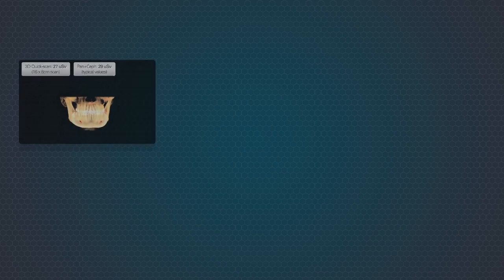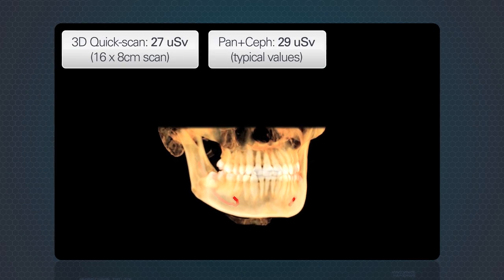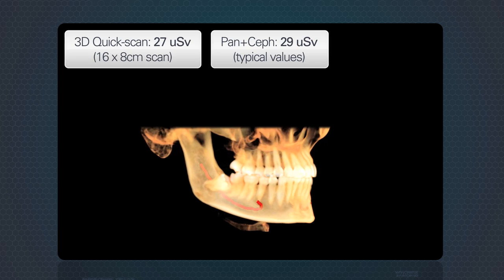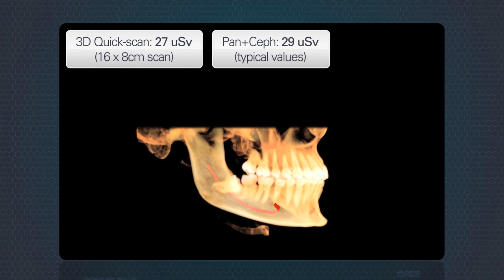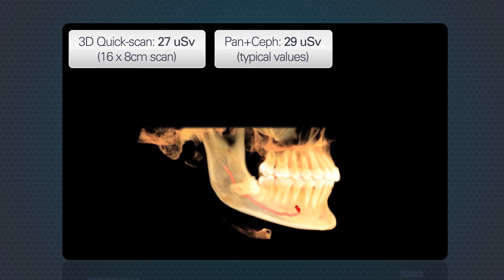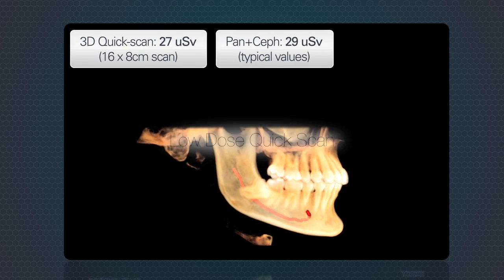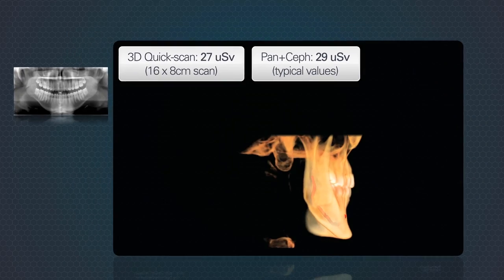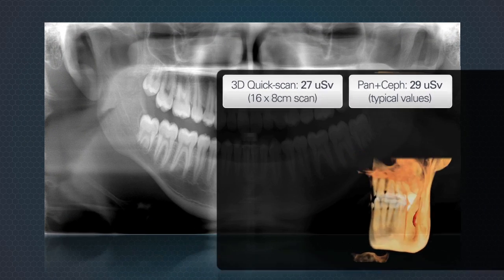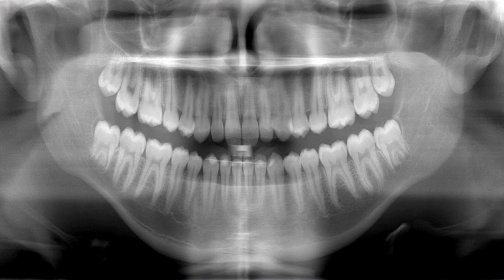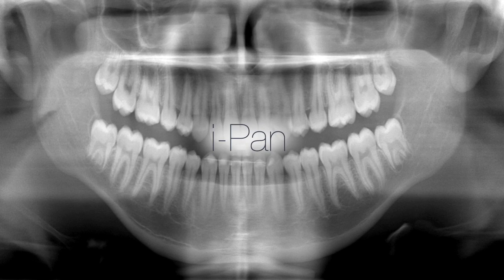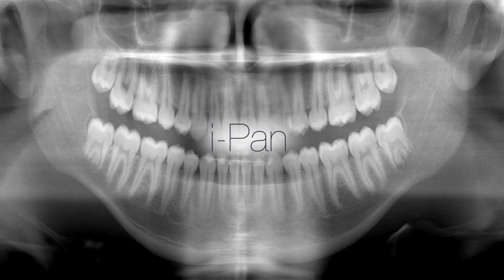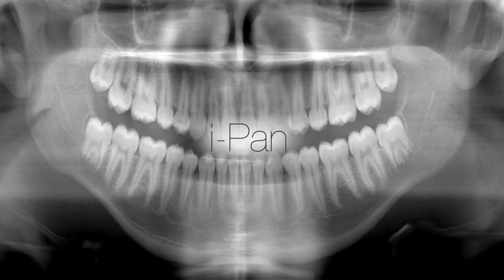With iCAT, patient health comes first. A 3D of the full patient dentition is available for less than the dose of a traditional pan plus CEPH using iCAT's exclusive Quick Scan. When traditional panoramic imaging is required, iCAT provides iPAN, a traditional low-dose 2D panoramic scan.